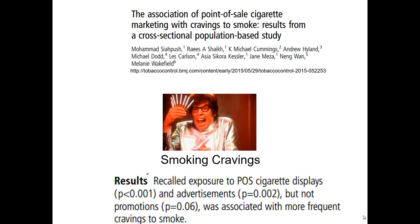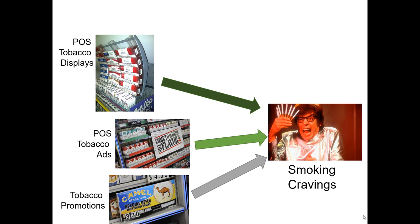In particular, it was looking closely to see if point-of-sale cigarette displays, point-of-sale cigarette advertisements, and point-of-sale cigarette promotions had a relationship with people having smoking cravings when they were exposed to that advertising content. When quickly scanning the results, it appears that point-of-sale tobacco displays have a strong effect on inducing smoking cravings, tobacco ads have a moderate effect, and tobacco promotions did not have a statistically significant relationship with smoking cravings.